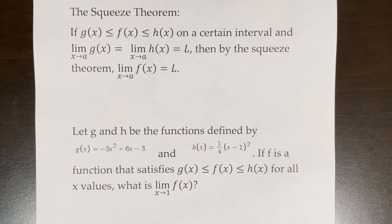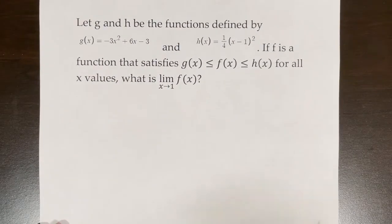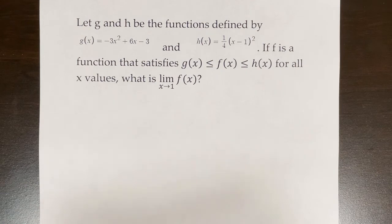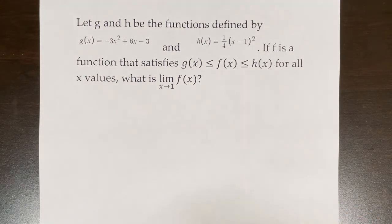This sounds really complicated with a lot of limits, numbers, and symbols, but we're going to break it down by doing an example. Let g and h be the functions defined by g(x) = −3x² + 6x − 3 and h(x) = ¼(x − 1)². If f is a function that satisfies this inequality for all x values, what is the limit of f(x) as x approaches 1?